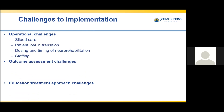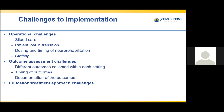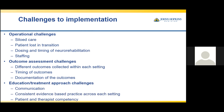Some operational challenges included siloed care, patients lost in transition, dosing and timing of neurorehabilitation, as well as staffing. Outcome assessment challenges included different outcomes collected within each setting, the timing of outcomes, and the documentation of the outcomes. Education and treatment approach challenges included the communication and consistency of care amongst the therapist team and care team.